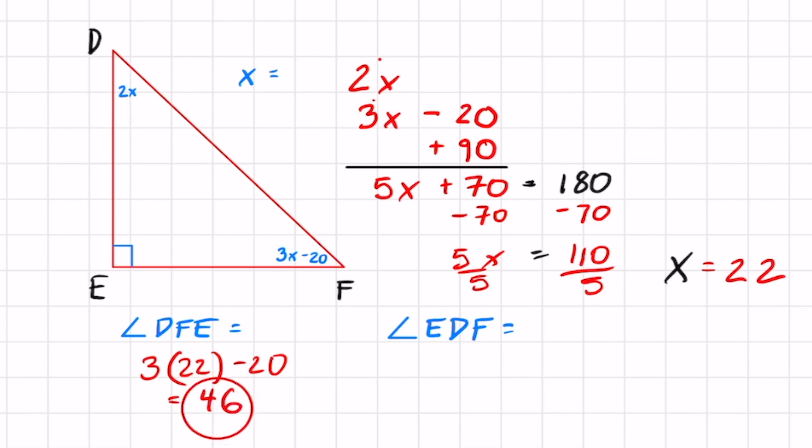So there's one answer. Now let's do EDF. EDF has the expression 2x. Just plug in 22 for x, that's gonna equal 44. You know that that's 90, now you know that this is 44, and you know that this piece is 46. Add them all up, you better get 180.